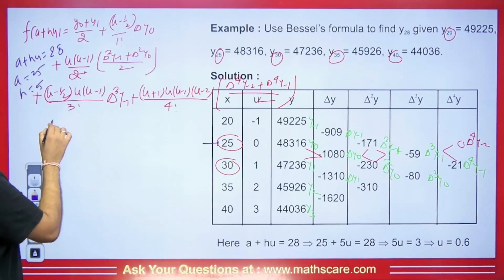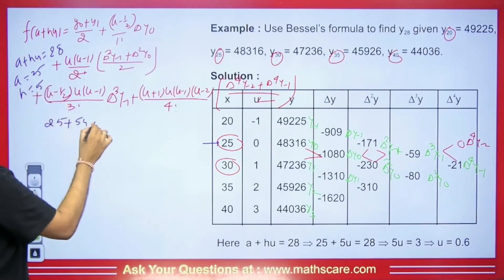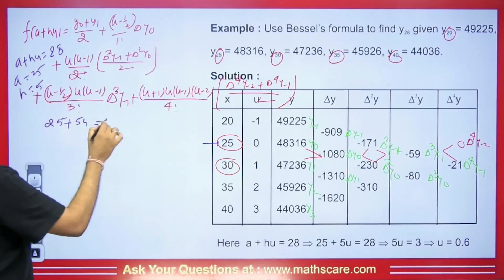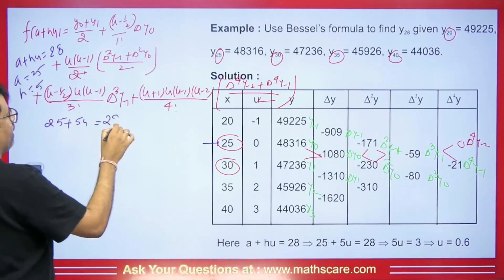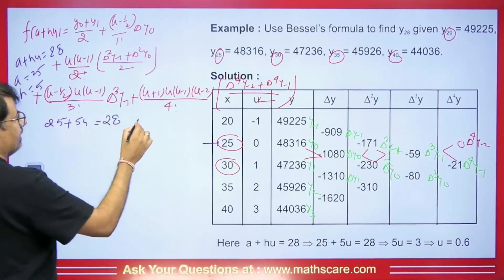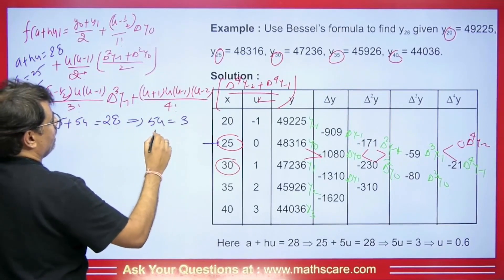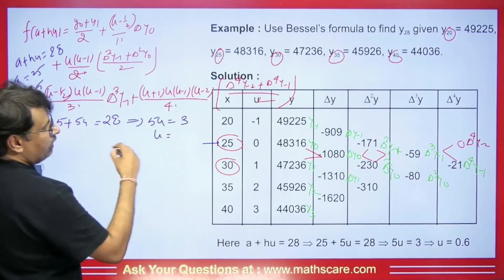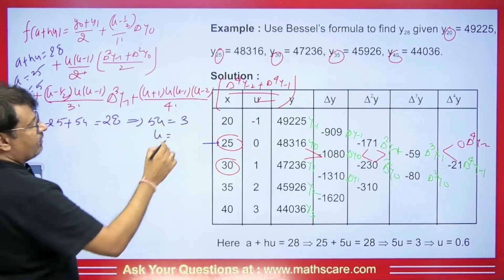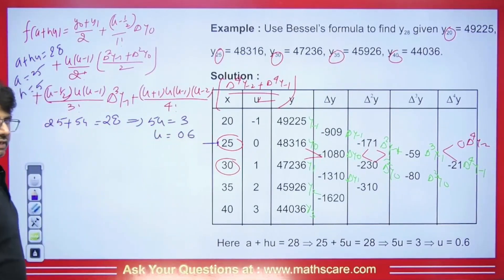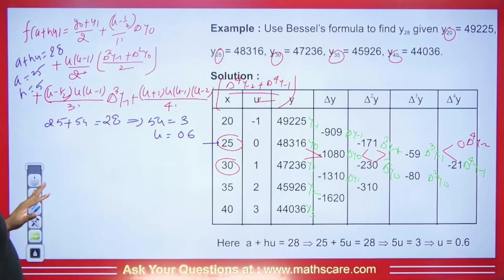So 5U equals 3, which gives U equals 3/5, that means U equals 0.6. This is how we find the value of U. Now we will place this value in the formula.